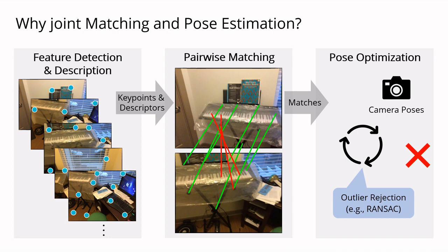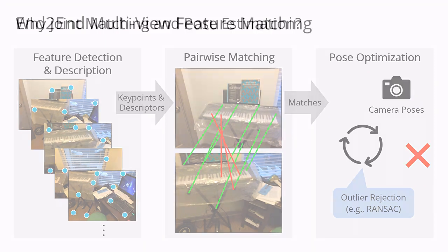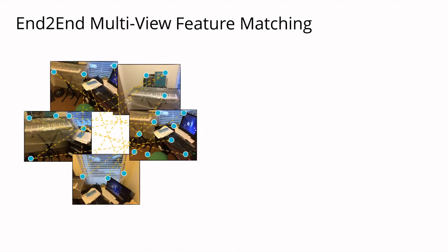Our idea is to address this problem earlier on by improving the matching. To this end, we jointly match across multiple views to support the correspondence reasoning.